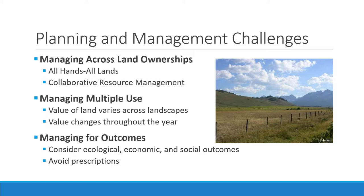I'm going to divide the major approaches to planning and management on rangelands into three categories. We'll start with managing across landownerships — approaches called 'all lands, all hands' or collaborative resource management. Then I'll talk about the challenge of managing multiple uses, since values and uses of land vary across the landscape and throughout the year. Finally, I'll talk about managing for outcomes — considering ecological, economic, and social outcomes and how we try to avoid prescriptions.